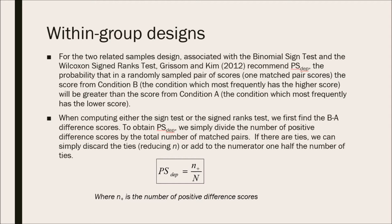When computing either the sign test or the signed rank test, we first find the B-A difference scores. And to obtain the PSDEP, we simply divide the number of positive difference scores by the total number of matched pairs. And if there are ties, we can simply discard the ties, which reduces N, or add to the numerator one-half of the ties. As long as you mention what you've done, it's a valid way of calculating the effect size. Here's the formula, where N-plus is the number of positive difference scores.